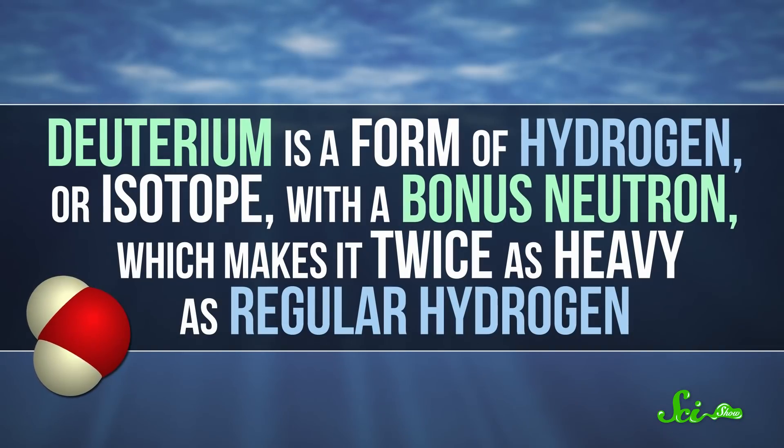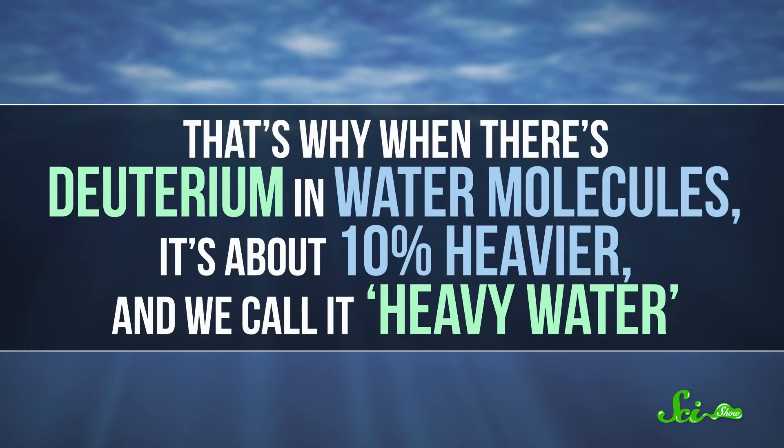Deuterium is a form of hydrogen, or isotope, with a bonus neutron, which makes it twice as heavy as the regular hydrogen we all know and love. That's why when there's deuterium in water molecules, it's about 10% heavier, and we call it heavy water.